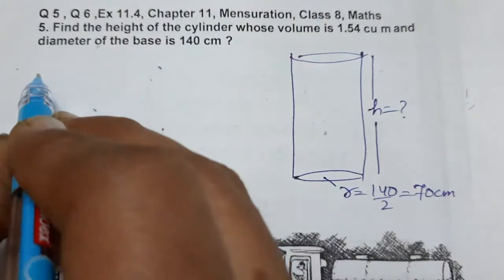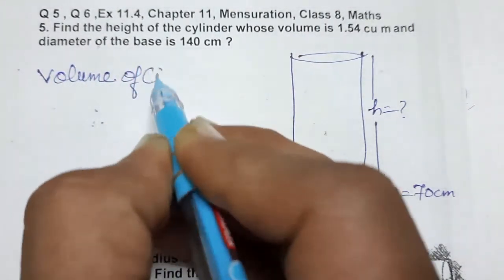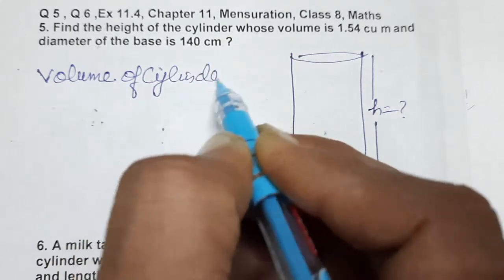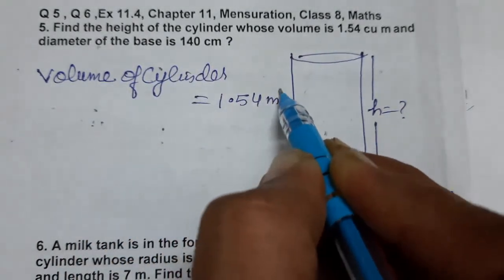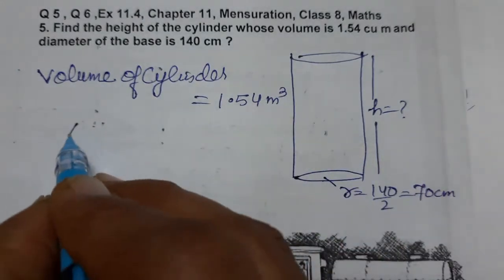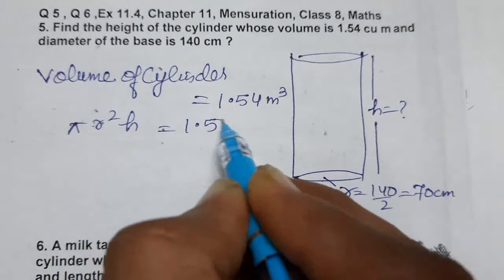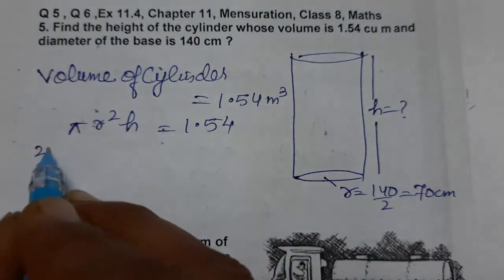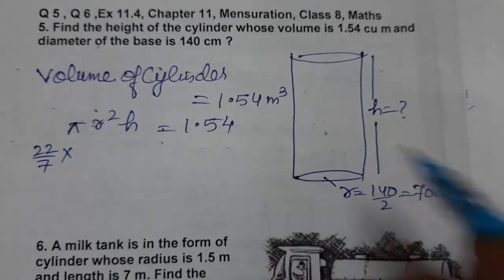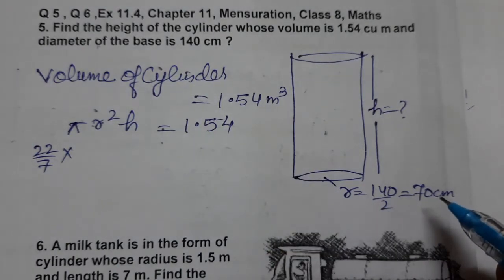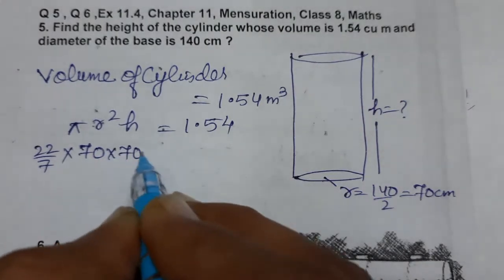The volume of the cylinder is given as 1.54 meter cube. We know the formula: volume of cylinder = πr²h = 1.54. Pi is 22/7. The radius is 70 centimeter, but notice the radius is in centimeters while the volume is in meter cube, so we need to convert units.